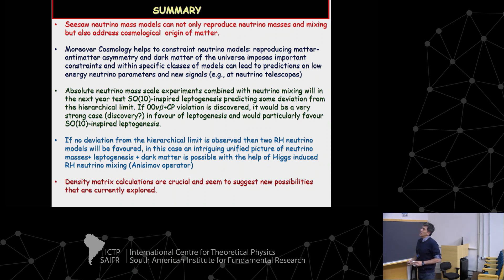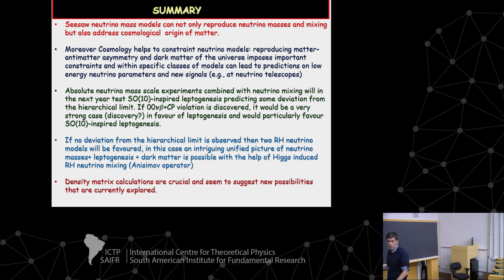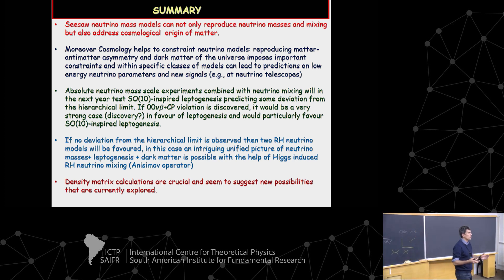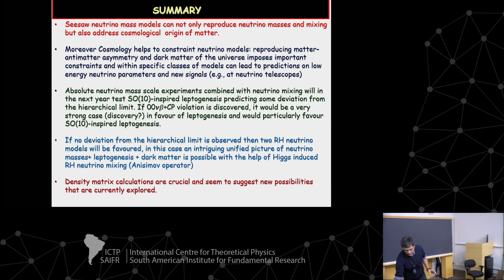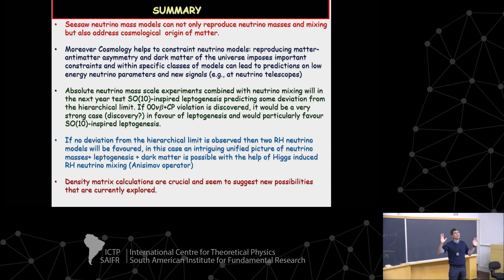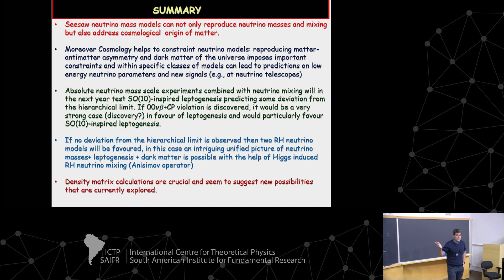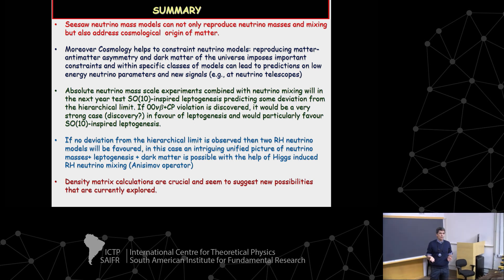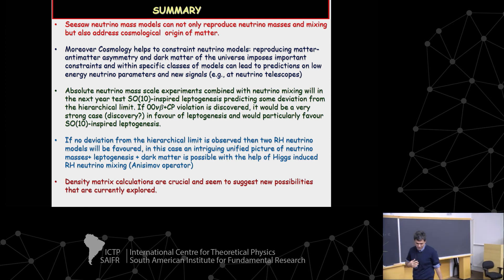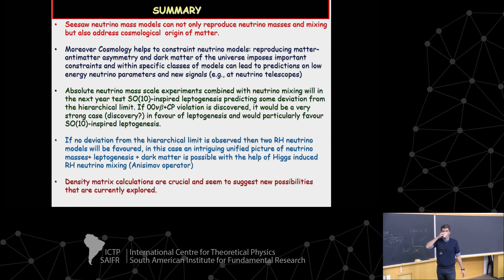In summary: seesaw neutrino mass models are able to reproduce neutrino masses and mixing but also address cosmological puzzles — not only leptogenesis but also dark matter. In the leptogenesis models I presented, the lightest neutrino mass is strictly zero, predicting a hierarchical spectrum, while the dark matter model also requires a hierarchy. The absolute neutrino mass scale experiments will therefore be very important in the next years to guide us toward the correct models. And use density matrix equations if you don't want to make mistakes — that is the final conclusion.